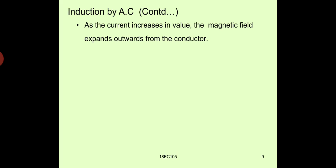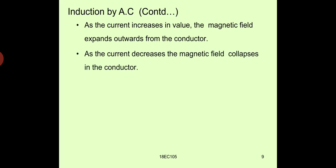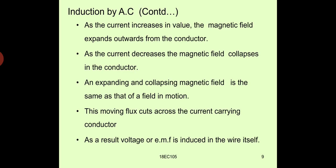These are the observations from the previous diagram. As the current increases in value, the magnetic field expands outward from the conductor. As the current decreases, the magnetic field collapses into the conductor. An expanding and collapsing magnetic field is the same as a field in motion. This moving flux cuts across the current-carrying conductor, and as a result, a voltage or EMF is induced in the wire itself.